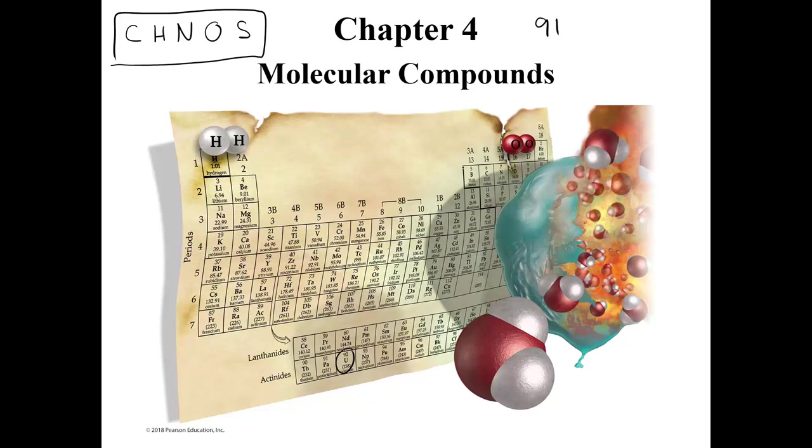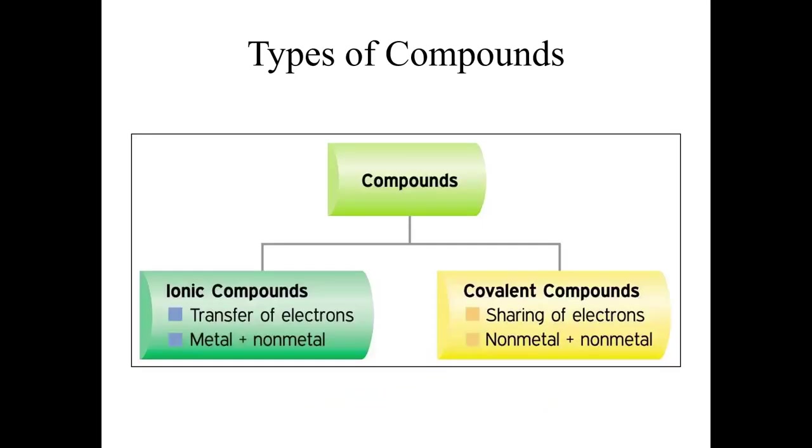In a nutshell, we have the dividing line. We've got the metals on the left and the non-metals on the right. If you have a metal and a non-metal, you get an ionic compound. If you have two non-metals or more making bonds combining, you have a covalent compound.